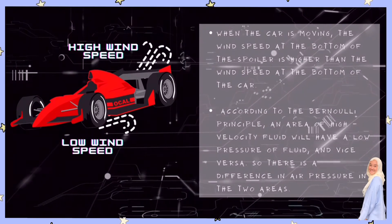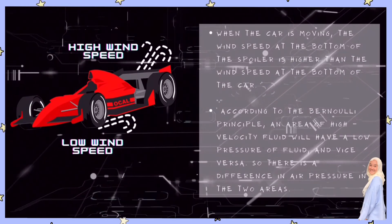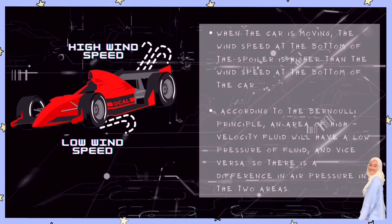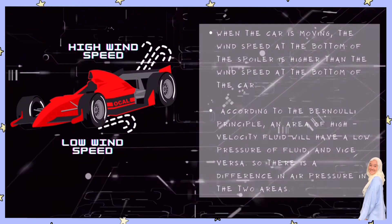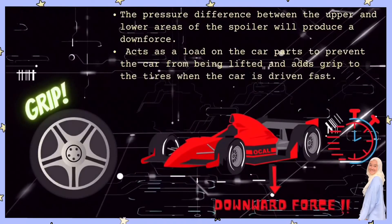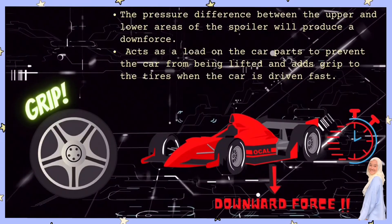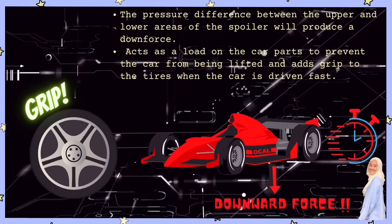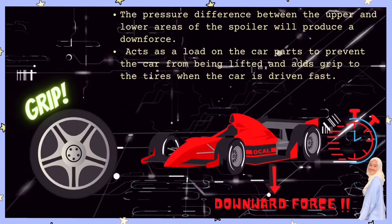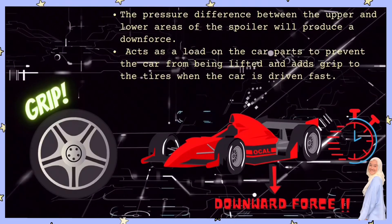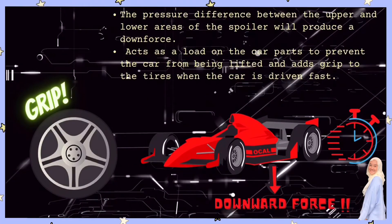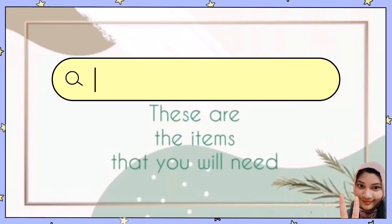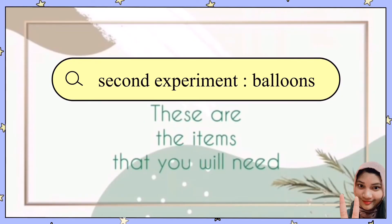According to Bernoulli's principle, an area of high velocity fluid will have low pressure. So there is a difference in air pressure in the two areas. The pressure difference between the upper and lower areas of the spoiler will produce a downforce. Downforce acts as a load on the car parts to prevent the car from being lifted and adds grip to the tires when the car is driven fast.